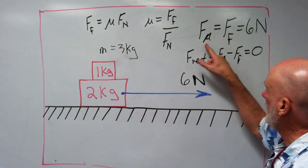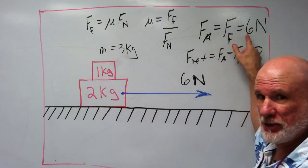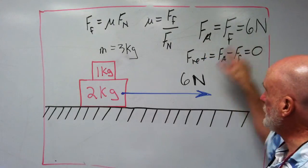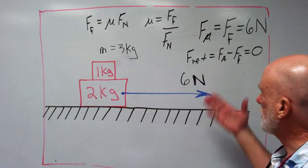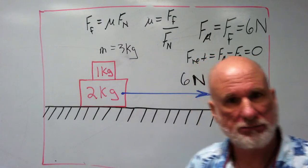Therefore, the applied force equals the friction, which equals six newtons. The net force is zero, so it's a constant velocity. Six newtons equals the friction.